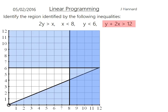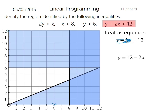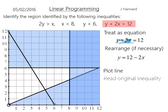For the final inequality, treat it as an equation: y plus 2x equals 12. There are two ways to do this. My personal favourite is the cover-up method — cover up the 2x so y equals 12, and cover up the y to get 2x equals 12, so x equals 6. You can also rearrange to y equals 12 minus 2x: a y-intercept of 12 and a gradient of minus 2, so for every one along it goes 2 down. Read the original inequality — we want to be above the line, so we shade below.